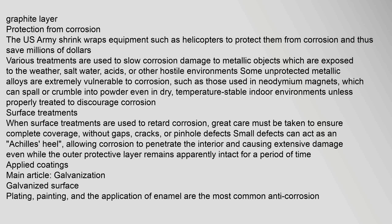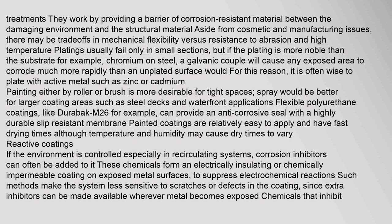Applied coatings — main article: galvanization. Galvanized surface plating, painting, and the application of enamel are the most common anti-corrosion treatments. They work by providing a barrier of corrosion-resistant material between the damaging environment and the structural material. There may be trade-offs in mechanical flexibility versus resistance to abrasion and high temperature. Platings usually fail only in small sections, but if the plating is more noble than the substrate — for example, chromium on steel — a galvanic couple will cause any exposed area to corrode much more rapidly than an unplated surface. For this reason, it is often wise to plate with an active metal such as zinc or cadmium.